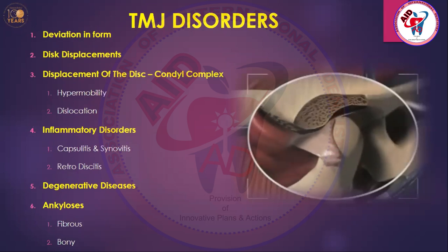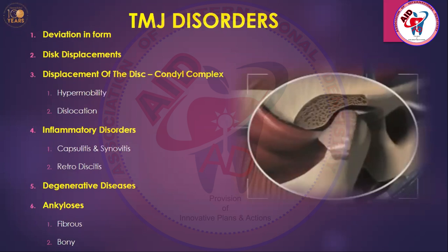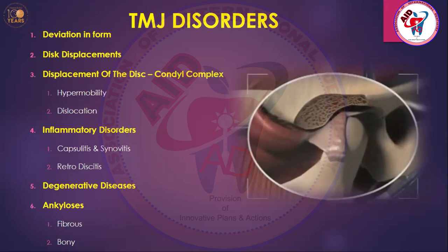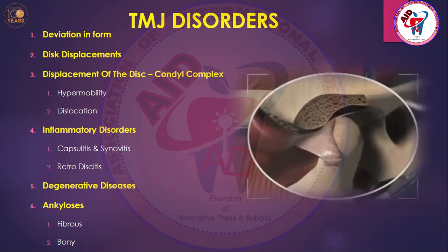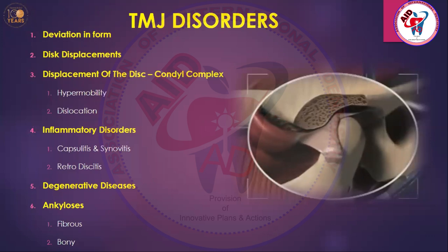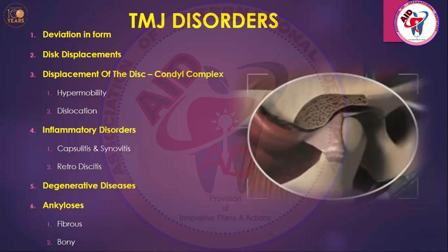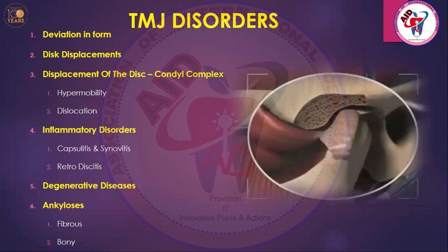Synovitis is another term. Unlike capsulitis, which is from the outside, synovitis is from inside the joint. The synovial superior and inferior spaces are lined by the synovial membrane, which has fibrous cells called fibroblasts. This membrane provides an important lubrication mechanism called the weeping mechanism — it absorbs synovial fluid and releases it drop by drop. If there is any inflammation or problem to this synovial complex, it is called synovitis.